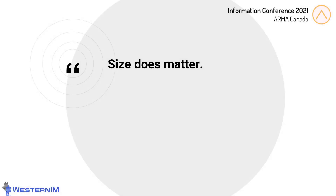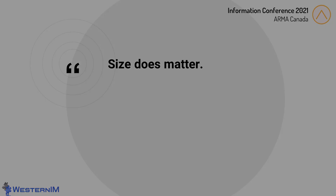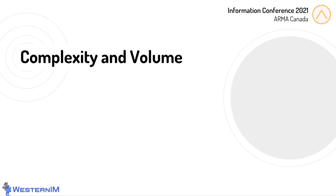Before we look at the steps in detail, let's look at one overarching principle: size does matter. But size may matter in a couple of ways that you're not really expecting. If this was an information theory conference, I would talk about entropy and scalability — those are $10 words — so let's use terms that are a little more approachable. Let's talk about complexity and volume.